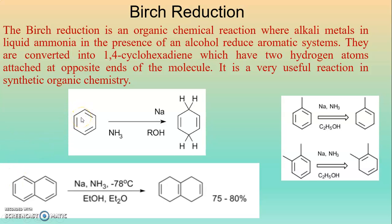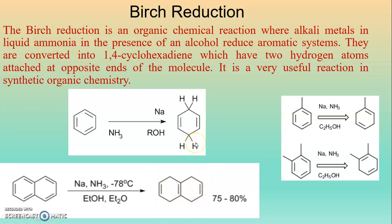Here, benzene is reduced by sodium in the presence of liquid ammonia and alcohol to give 1,4-cyclohexadiene. This is toluene — under Birch Conditions we get 1-methyl-1,4-cyclohexadiene. This is orthoxylin — under Birch Conditions we get 1,2-dimethyl-1,4-cyclohexadiene. This is the naphthalene molecule, reduced under Birch Conditions to give 1,4,5,8-tetrahydronaphthalene.